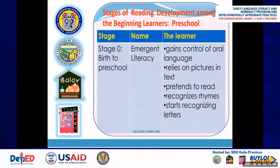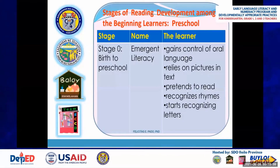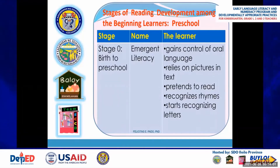Let us start with the stages of reading development. Stage 0 happens during birth to preschool and is named emergent literacy, where the learner gains control of oral language. They rely on pictures and text, which is why we use picture books. They also pretend to read, and eventually they read like an adult and really believe they can read. The child also recognizes rhymes — when they hear their mother sing, they sing along, but only the rhyming words are heard. Lastly, they start recognizing letters; the normal age for all children to recognize letters is age 4.